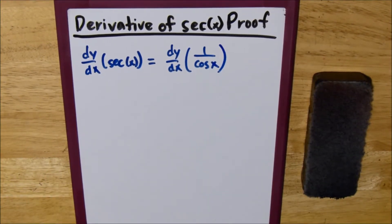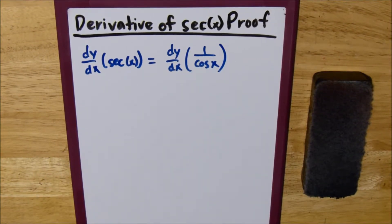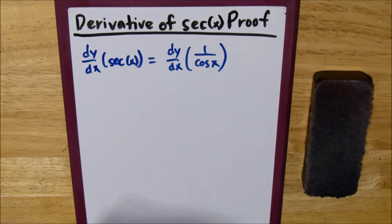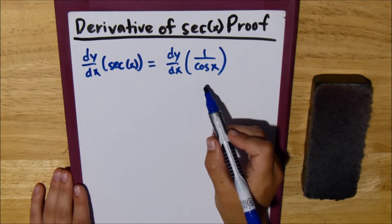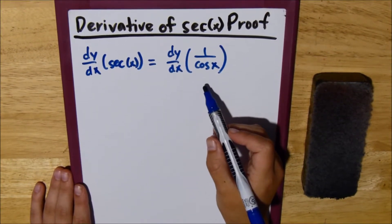We know from previous courses that secant of x is the same thing as 1 over cosine of x. So what we can do is apply the quotient rule.